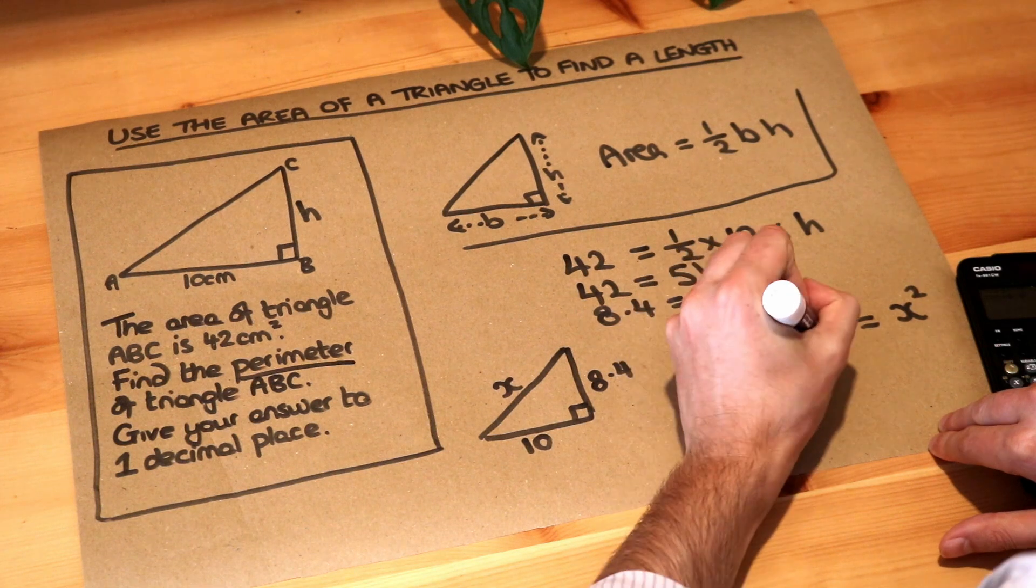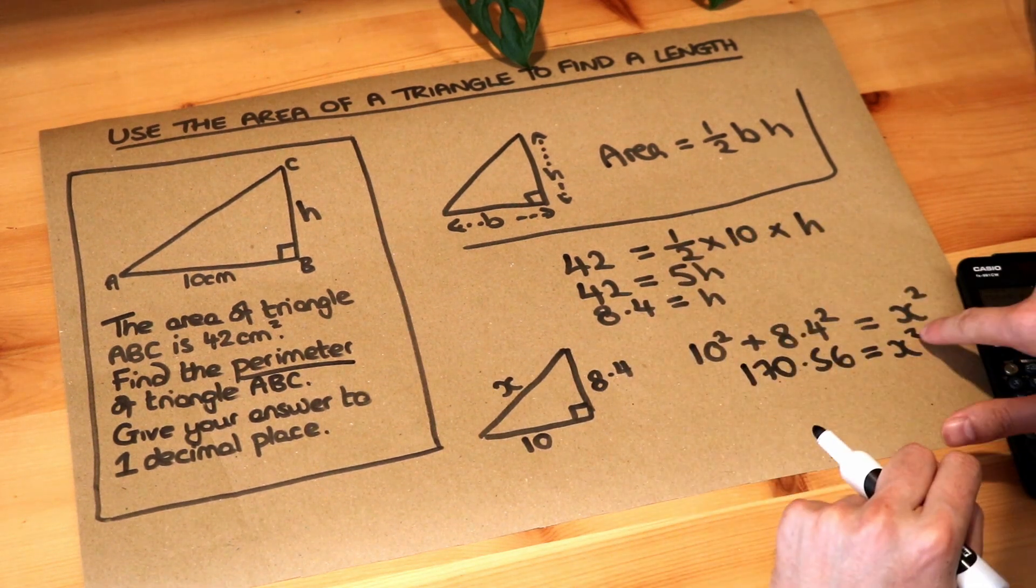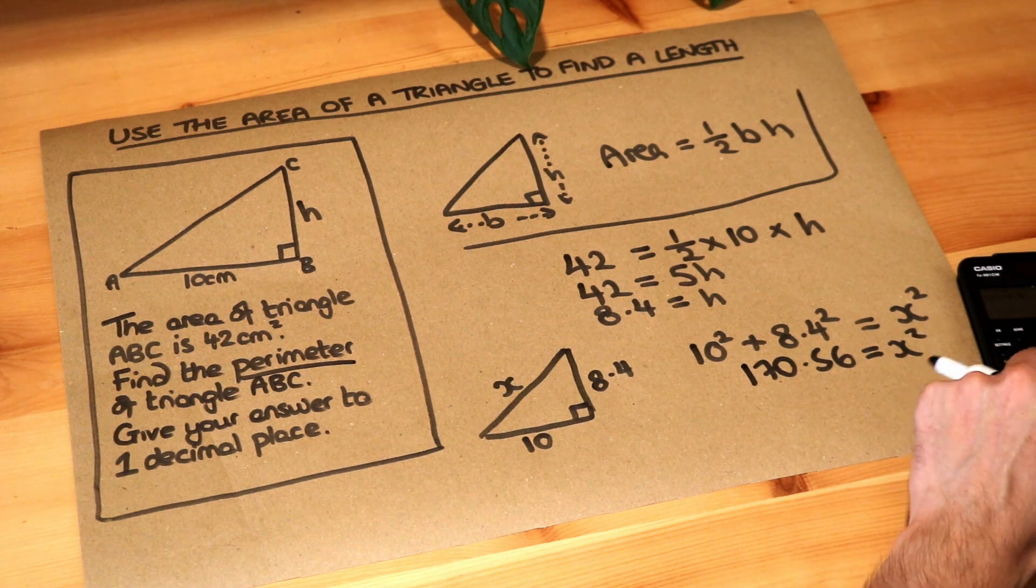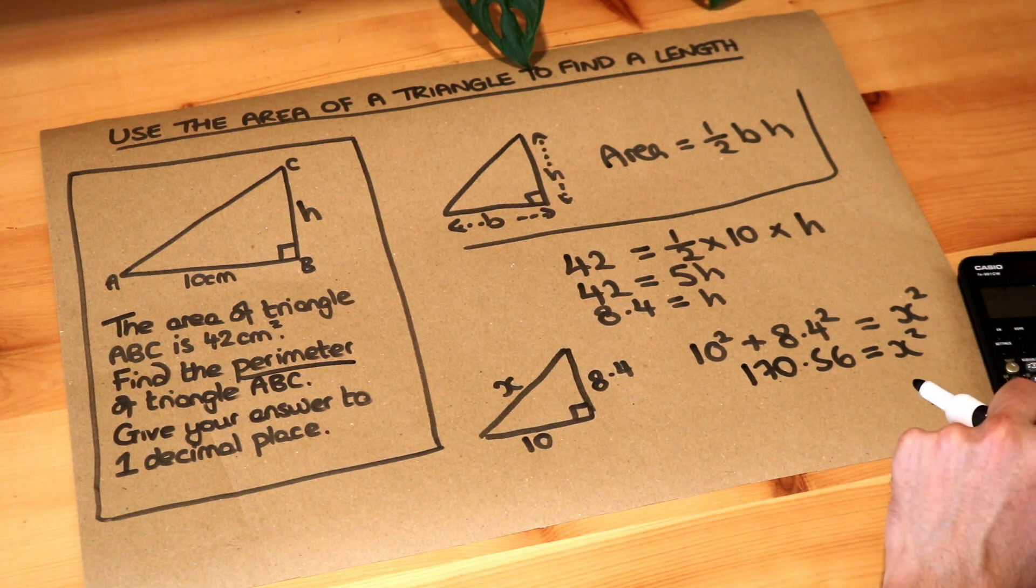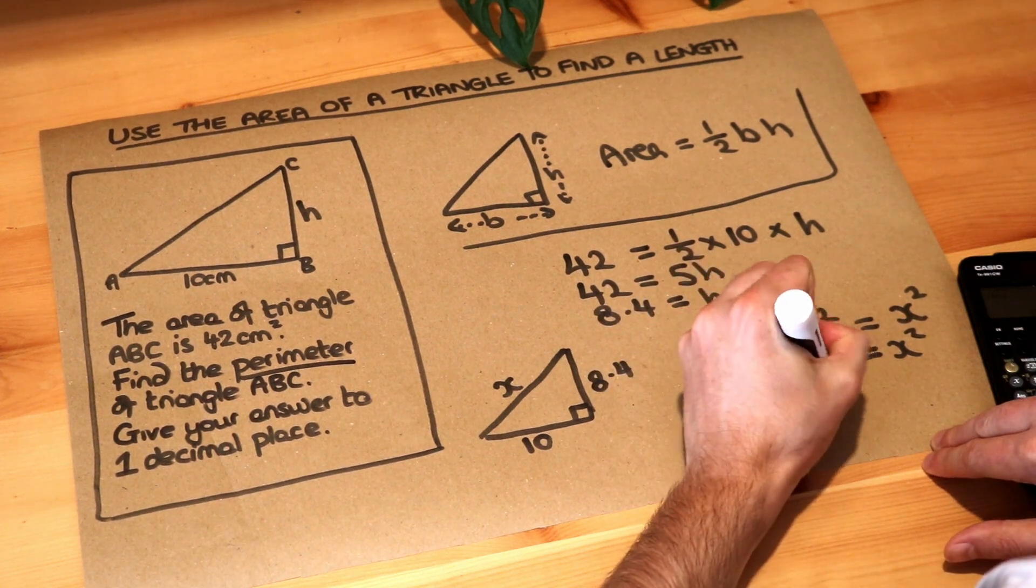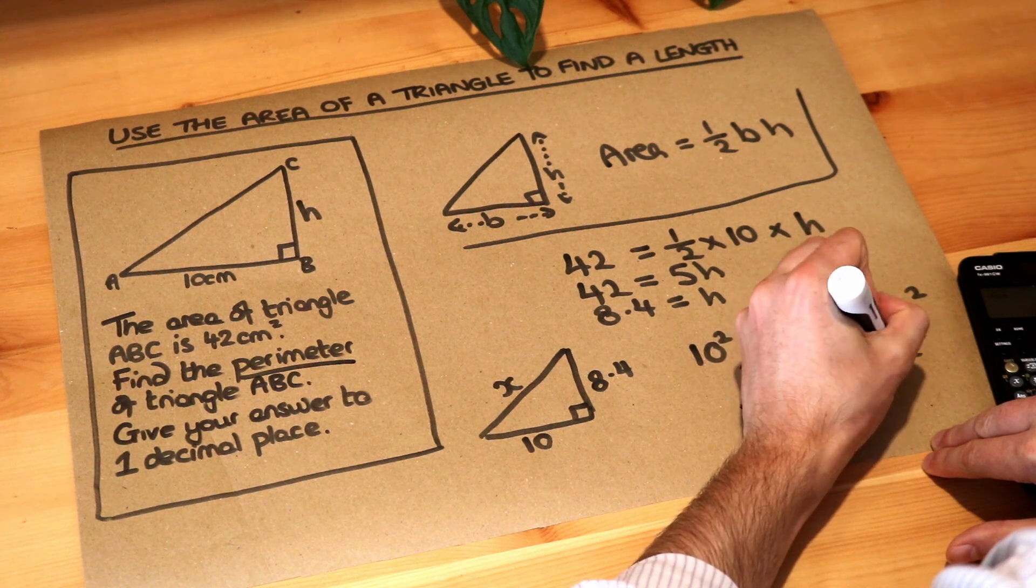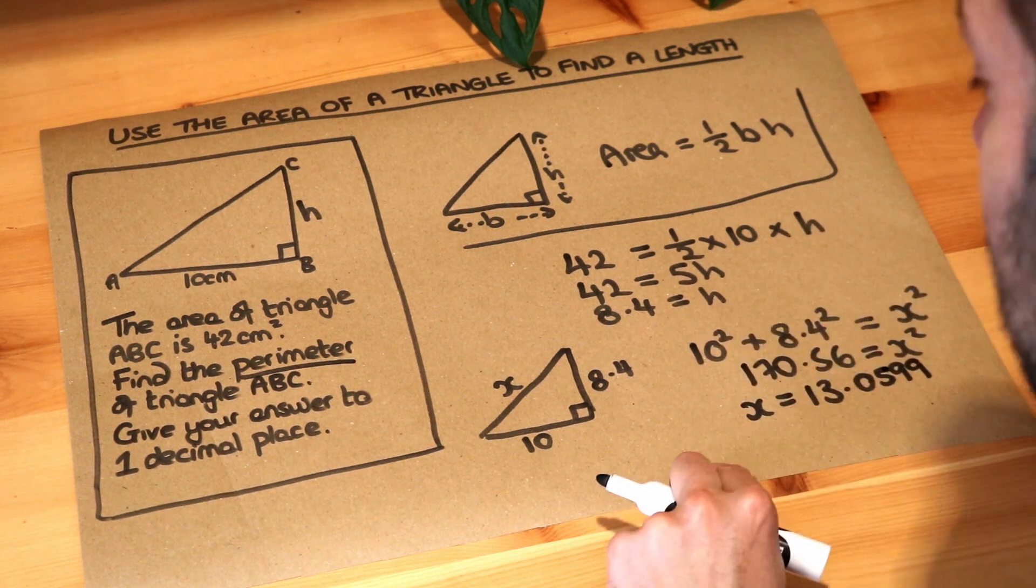And that's 170.56. Now I've got X squared, but I want X, so to get rid of the squared I need to square root it, so square root of that answer. And that gives me a value of X is 13.0599. Now, we want the perimeter of this triangle.